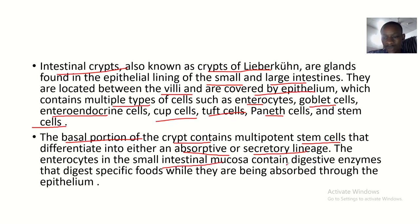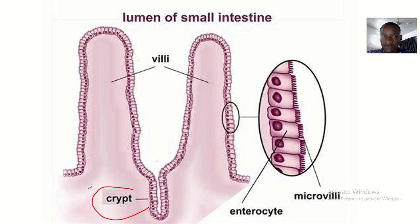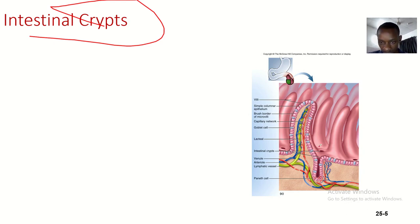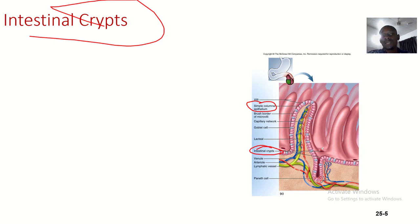The enterocytes in the small intestinal mucosa contain digestive enzymes that digest specific foods while they are being absorbed through the epithelium. Here is an image of the intestinal crypt — you can see they are covered by epithelium and appear as holes.